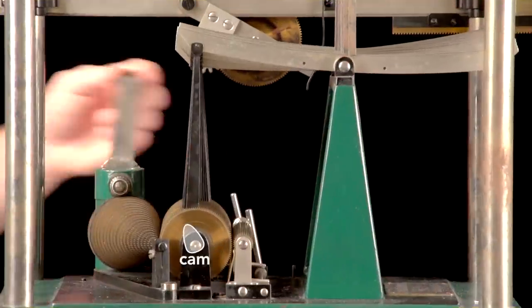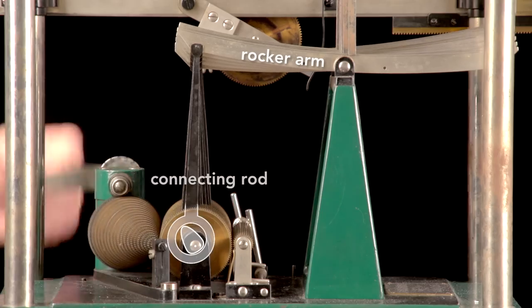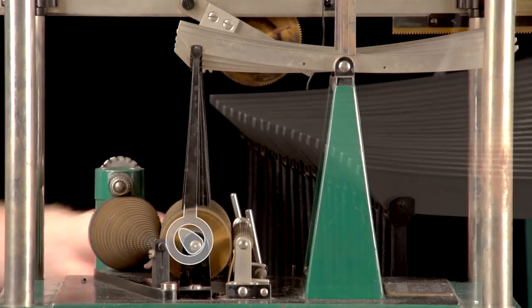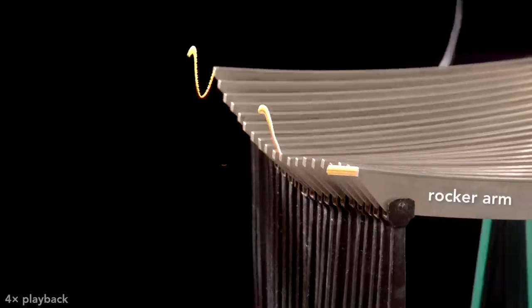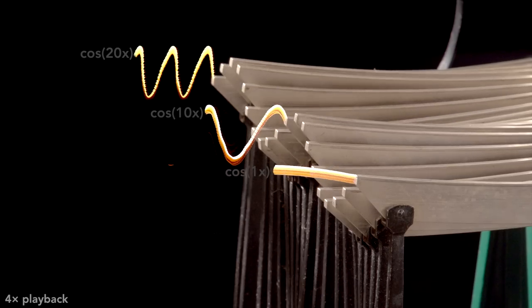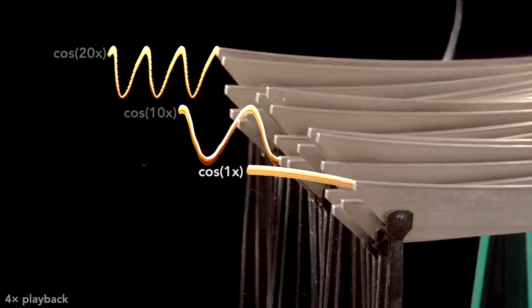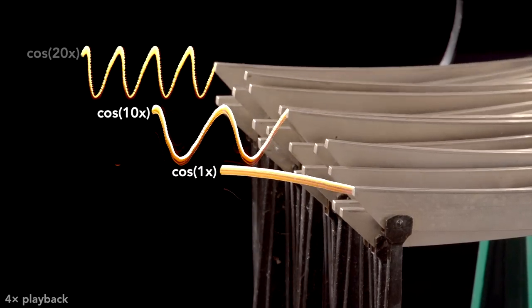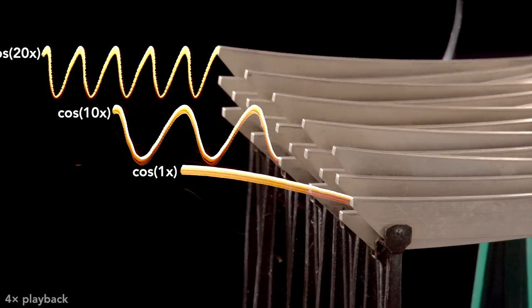A cam on each gear drives a rocker arm up and down via a connecting rod. As each gear rotates, the corresponding rocker arm traces out a sinusoidal motion with the same frequency. For example, the first rocker arm oscillates to produce cosine 1x, the tenth produces cosine 10x, and the twentieth cosine 20x.